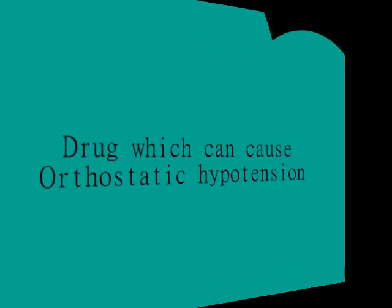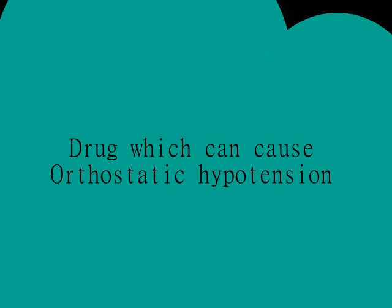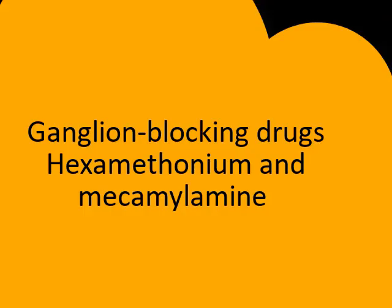Here I am giving a brief account of drugs which can cause orthostatic hypotension. Ganglion-blocking drugs like hexamethonium and mecamylamine cause blockade of both the sympathetic and parasympathetic nervous system, leading to reduction in arteriolar and venous tone, which causes orthostatic hypotension.